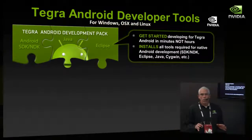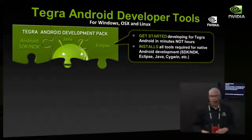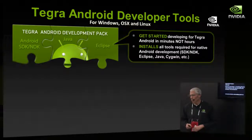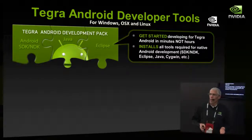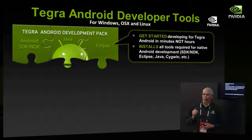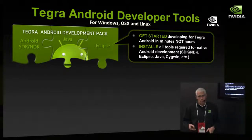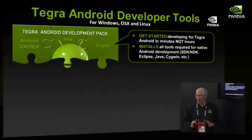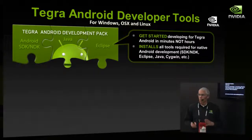I'm going to walk through our selection of tools, which come together as a set of puzzle pieces. At the top level, we have what we call the Tegra Android Developer Pack. This is a solution available for Windows, OSX, and Linux. If you've ever installed an Android development environment, this really simplifies bringing that together. Typically you have to go download the Android SDK and NDK, there's Cygwin, drivers, all kinds of different things. With a single download, you run it, and in 30 minutes you're up and running developing for Android. As Google updates their NDK and SDK, we provide updated versions to keep you running with the latest.